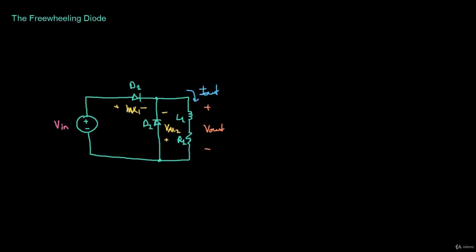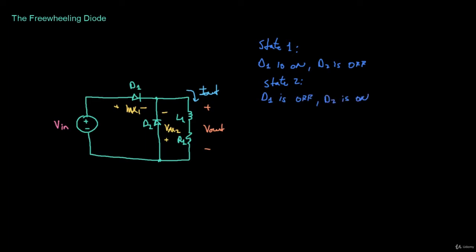That's why we call this diode a freewheeling diode — the output current flows through D2, L1, and R1, so the output is kind of feeding itself. We have two states for this rectifier: state 1 where D1 is on and D2 is off, and state 2 where D1 is off and D2 is on. State 1 is from 0 to π and state 2 is from π to 2π.